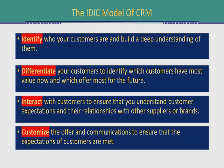The fourth part of this model is represented by 'C', which stands for Customize — customization of the offer and communication to ensure that the expectations of the customers are met. Here the focus is on how you can create an offer for an individual customer keeping their expectations in mind, and how you can communicate that offer considering their expectations.